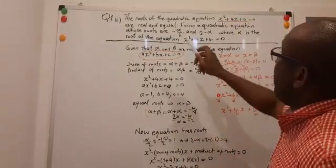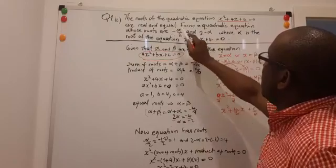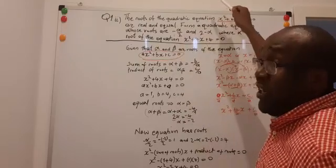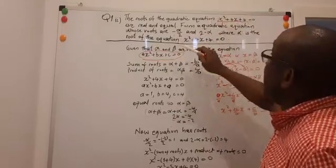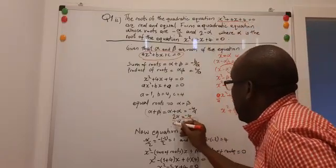I already have my α. I've been told that the new equation has to form roots -α/2 and 2 - α. Our α, we've calculated it to be -2.